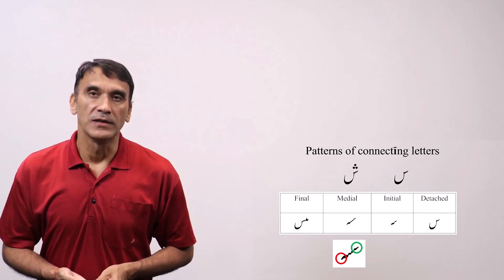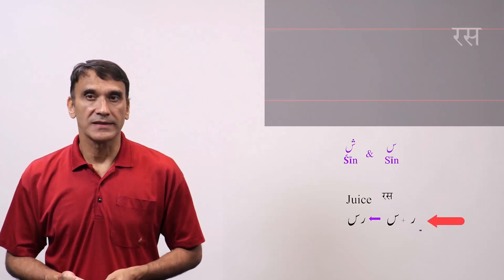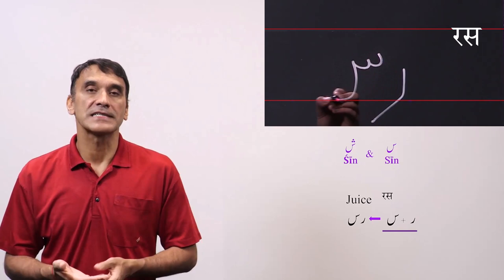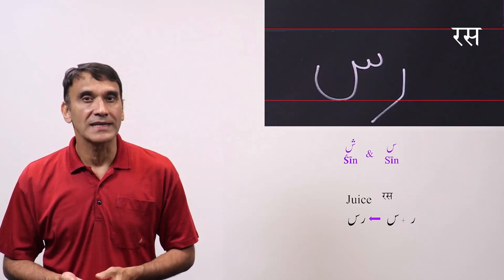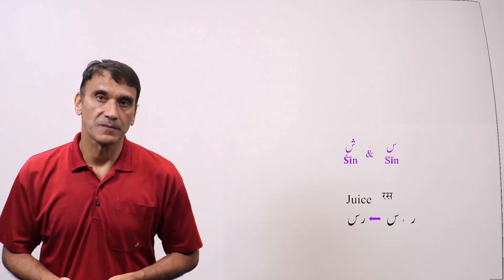Let's now take some words. The first word is ras, meaning juice. The spelling is re plus seen. Here the shape of seen is detached because the previous letter is re, which is non-connected. So you simply write re for r sound and seen for ser sounds. So re, seen, rsa, ras.